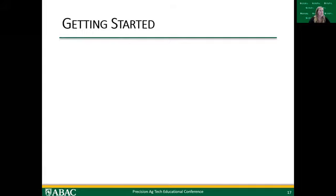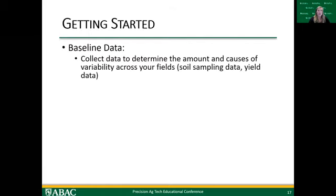So getting started — if I haven't done any Precision Ag so far, here are the steps to get started and implement this. First, you've got to collect that baseline data set to start looking at variability across your field. You want to collect data to determine the amount of variability and the causes of variability across your field. Two of the biggest data sets we typically look at are soil sampling data and yield data — these are fairly easy to get and can tell us a lot about the variability in our field.